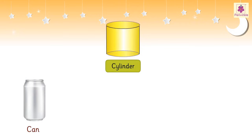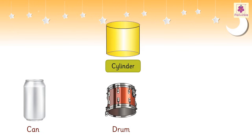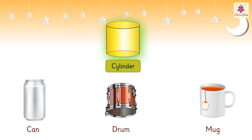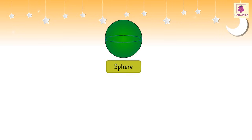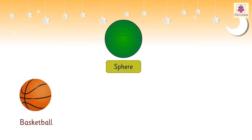This is a cylinder. A can, a drum, and a mug are all examples of a cylinder.